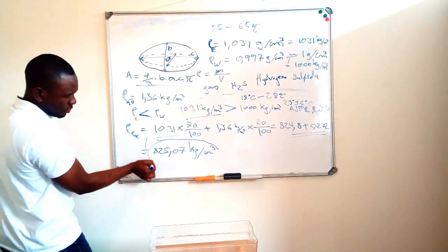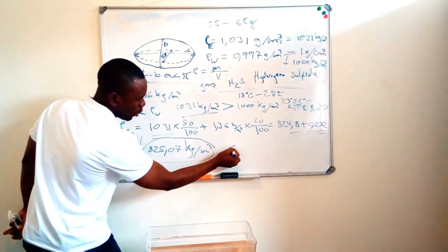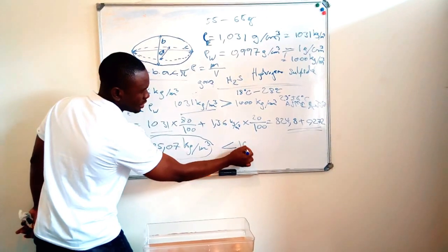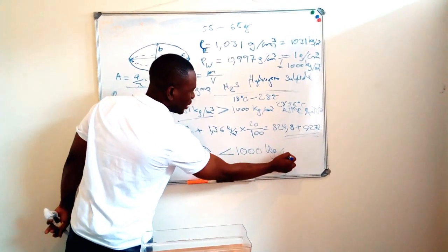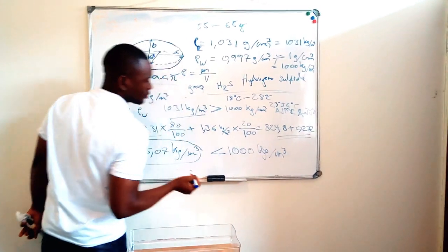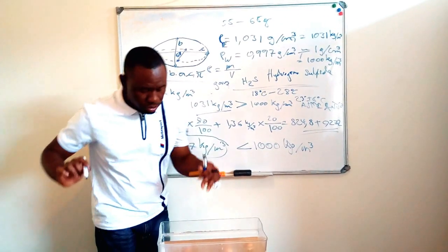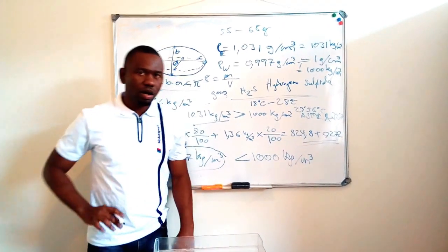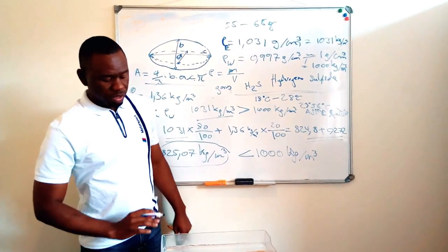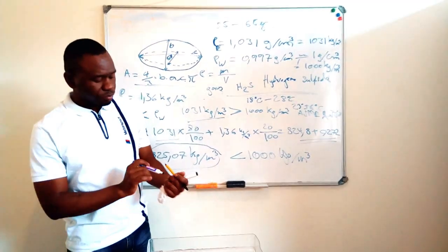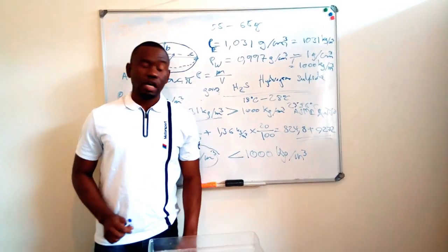So we realize that this density is lower than the density of water, which is equal to a thousand kilograms per cubic meter. So this is the reason why your eggs are at the surface of water. This is why they are not sinking.